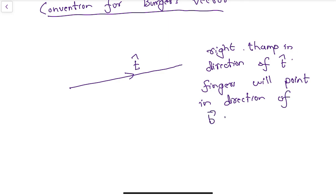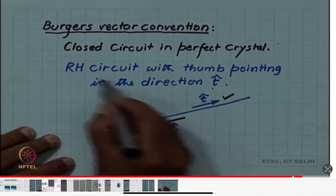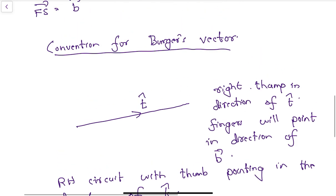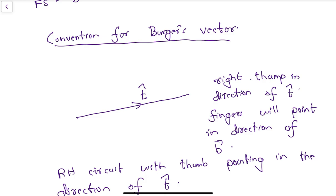This is the convention we follow. Usually we take the dislocation line in the direction of the thumb, right hand thumb. This is a right hand circuit with thumb pointing in the direction of the tangent vector. You can also get it through the slip way. This is Burgess vector as another way of approaching it.